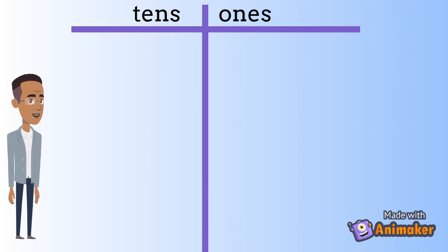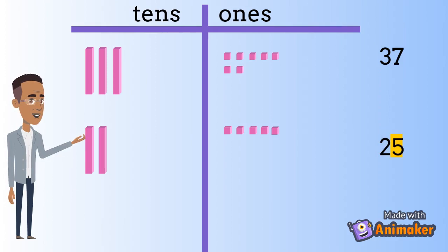Now it's time to build our numbers. We know from earlier that 37 has 3 tens and 7 ones, and that 25 has 2 tens and 5 ones.